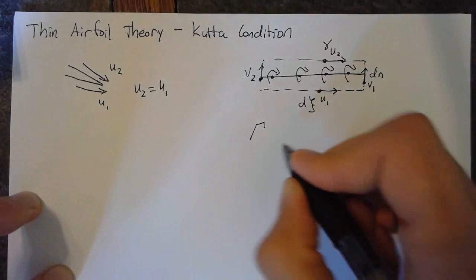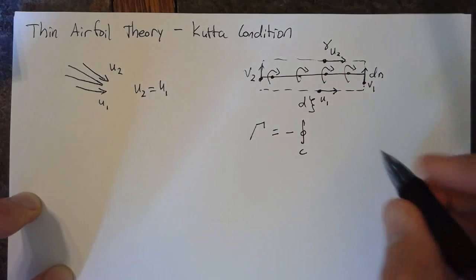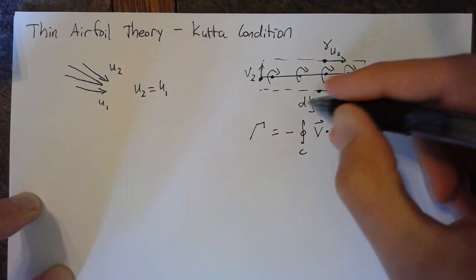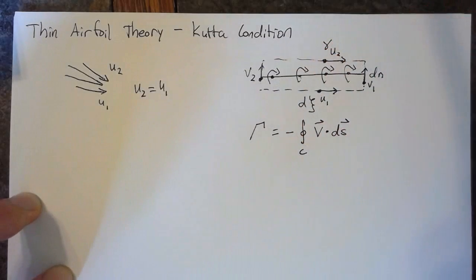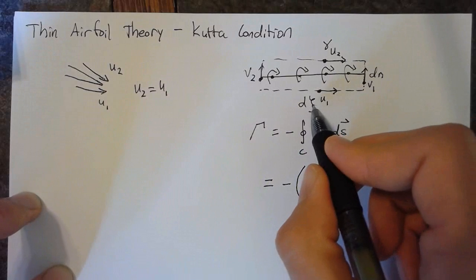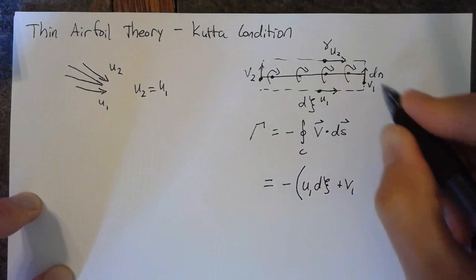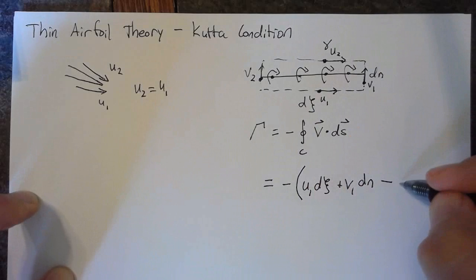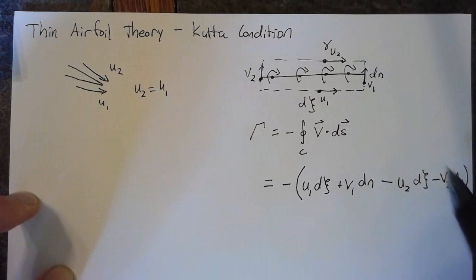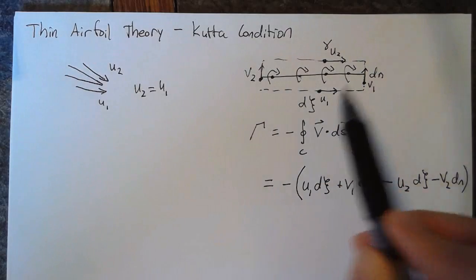The definition of the circulation is simply equal to the negative integral over a closed curve — which is what our dotted line is here — times our velocity dotted with our ds. Remember that ds operates in a counterclockwise direction around the surface. So this means that we can evaluate this as U1 times dc plus V1 times dn minus U2 times dc minus V2 times dn. Both of these are negative simply because this dot product is negative — the velocity and the orientation of our curve are in opposite directions.